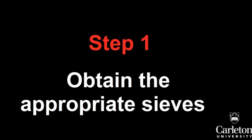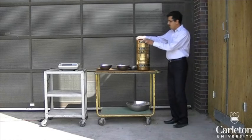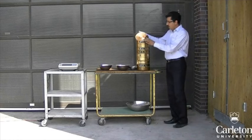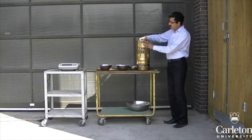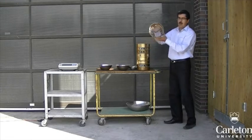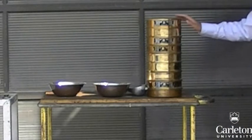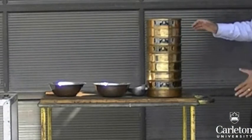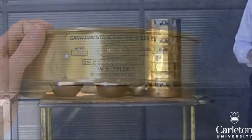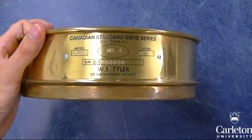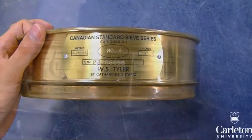In this lab, we will be filtering the soil sample through a series of progressively smaller sieves. Sieves are simply metal meshes of a particular size framed by a round rim. These are the sieves that we will be using. The sieve at the top has the largest hole size, while the sieve at the bottom has the smallest. There are many different sieve sizes available.